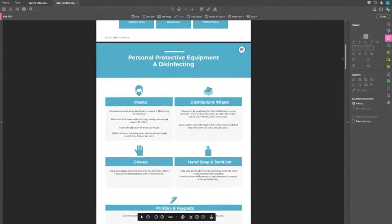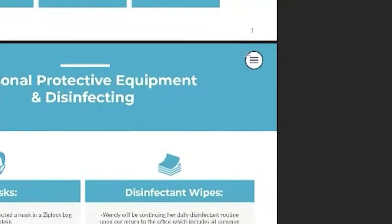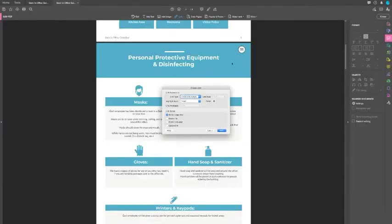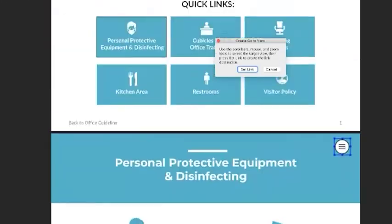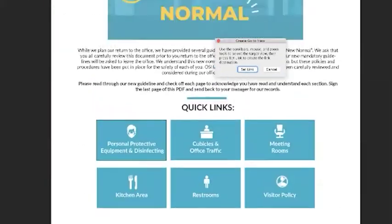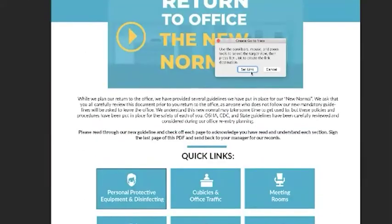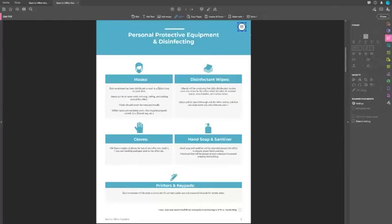The same thing applies for the menu button. All this is is just an icon we grabbed online, and we're linking it back to the first page. It's going to ask you to go to a page view, and then you just set the page view you want, click 'Set Link,' and now you have an interactive menu button right in your PDF.